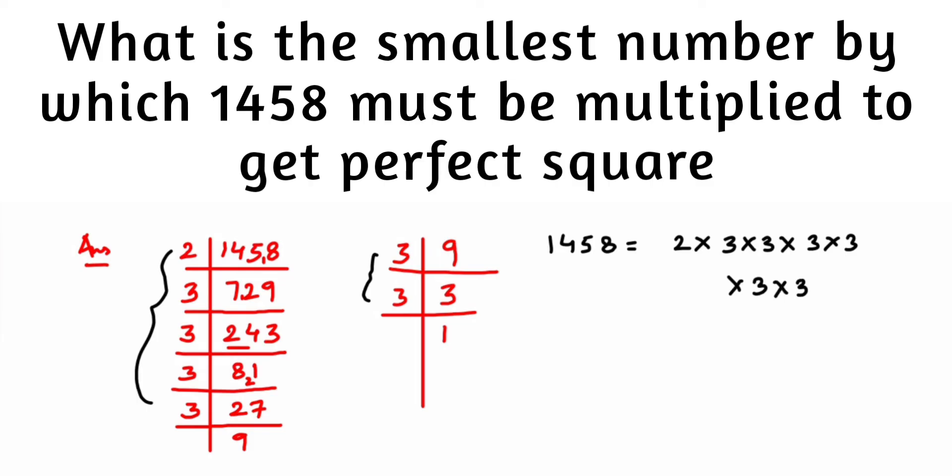Now when you look at these numbers or the factors, every 3 is forming a pair. This is one pair, this is one pair, this is one pair, and this is one pair. But here this 2 is left alone, like it doesn't have any number, it's a single number.